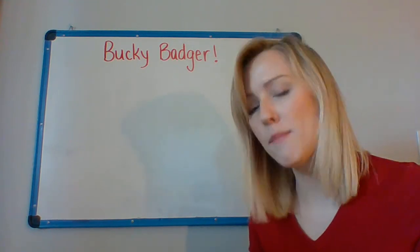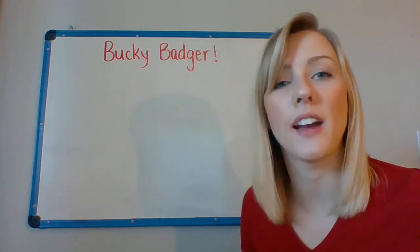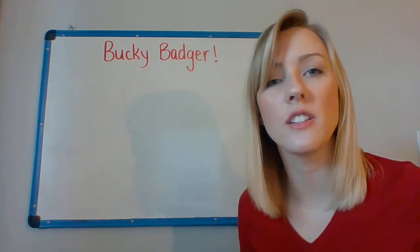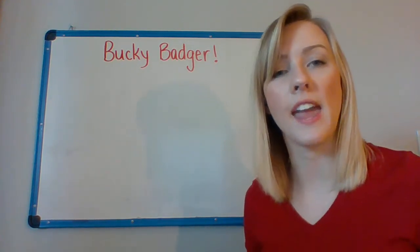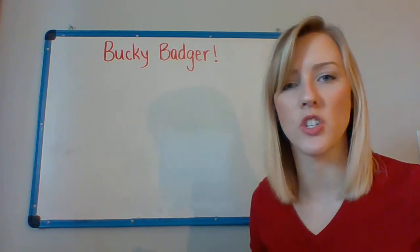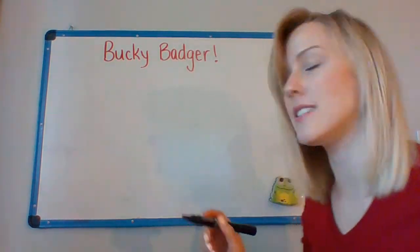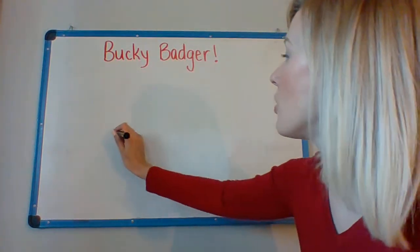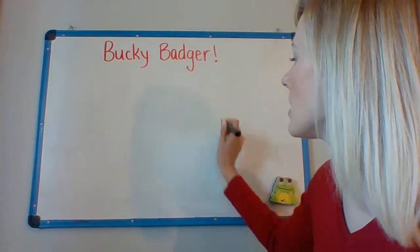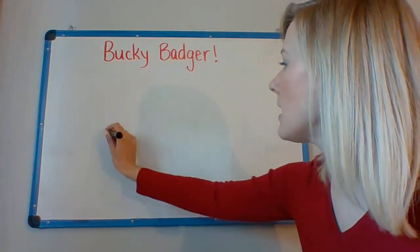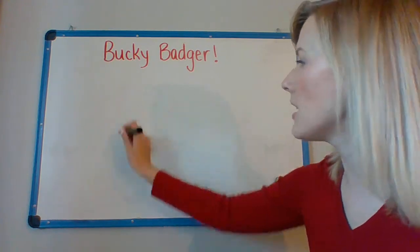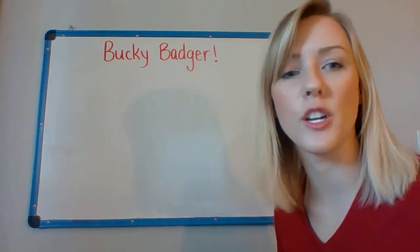So when we make Bucky Badger, we are going to start with a football shape. We're only going to be making his head, so the football shape is going to be about in the middle of where you're drawing.